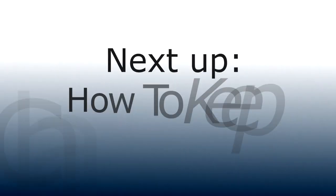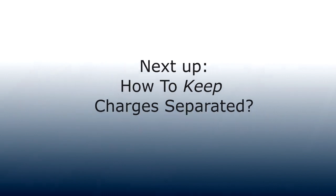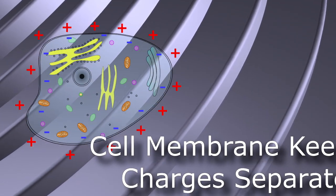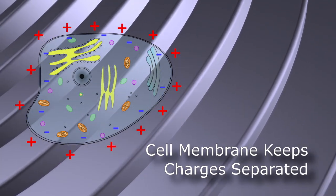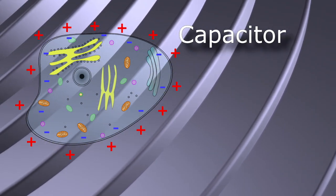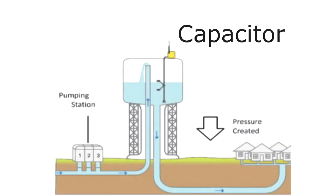Okay. So we move charges apart. How do we keep them separated? Well, in the cell membrane, it was the cell membrane that kept them separated. And what this is, is a capacitor. A capacitor is a device that can store charges much like a water tower stores energy by elevating or separating water from the ground.